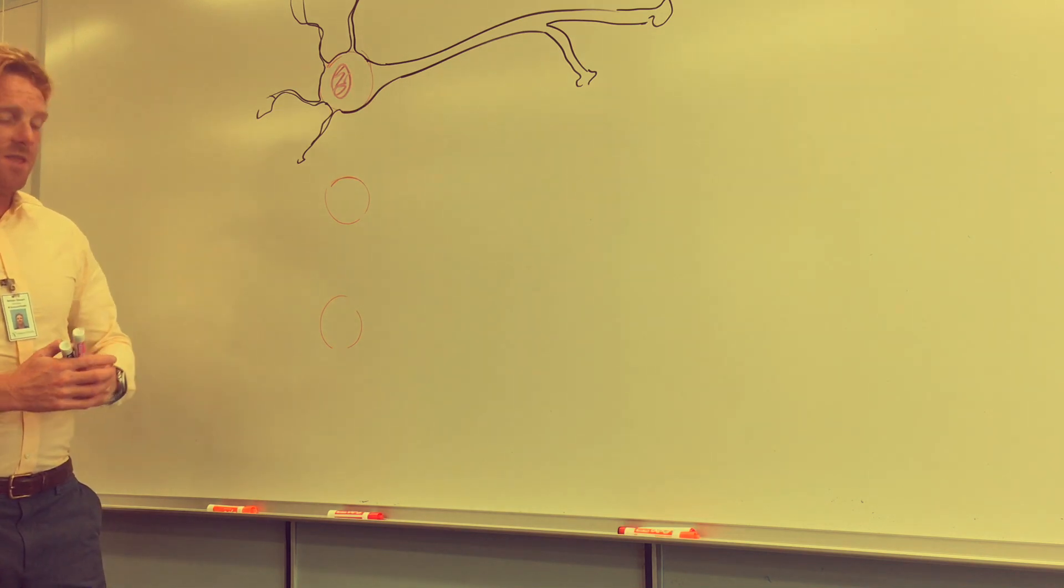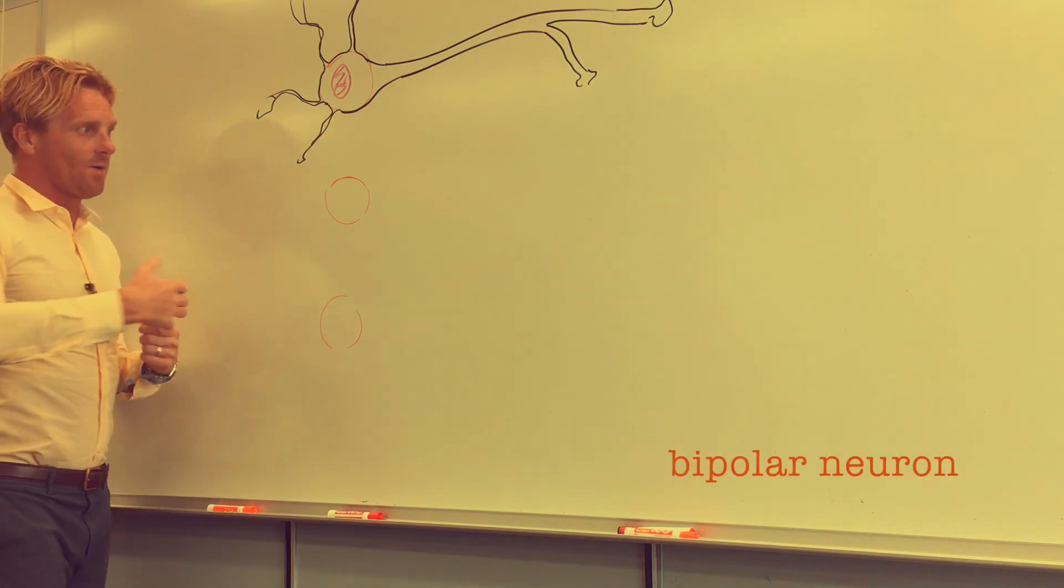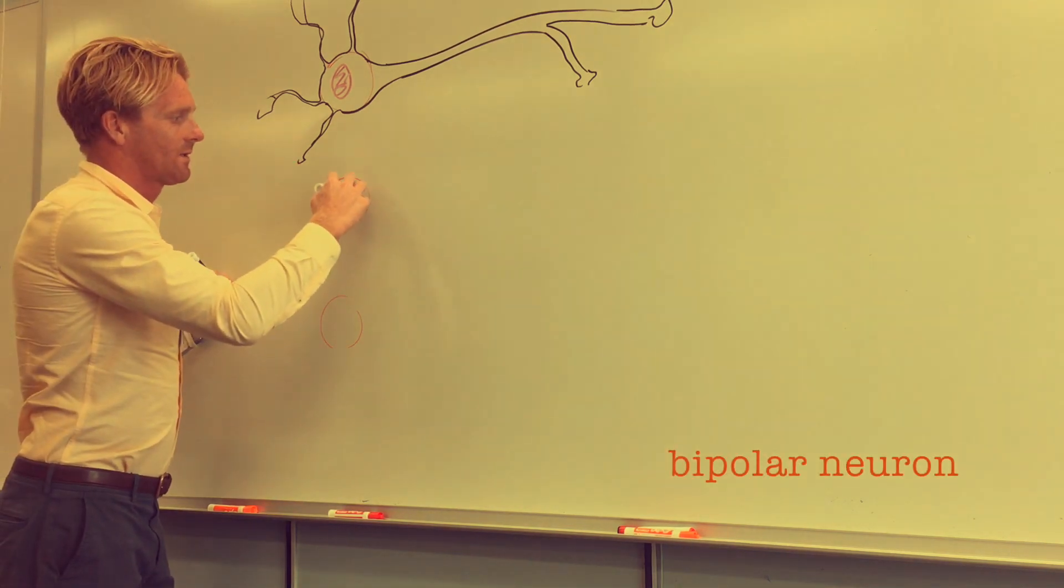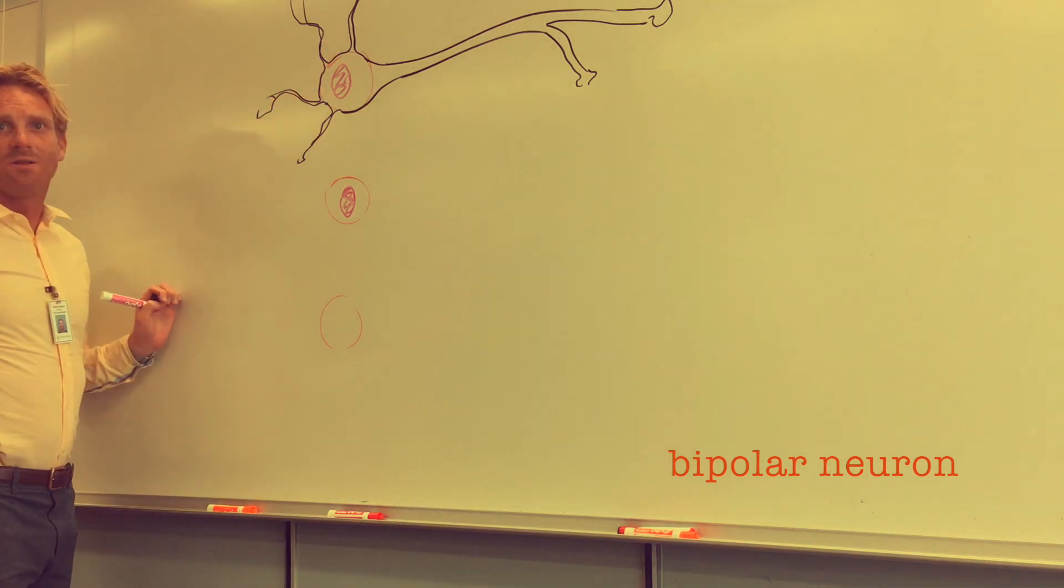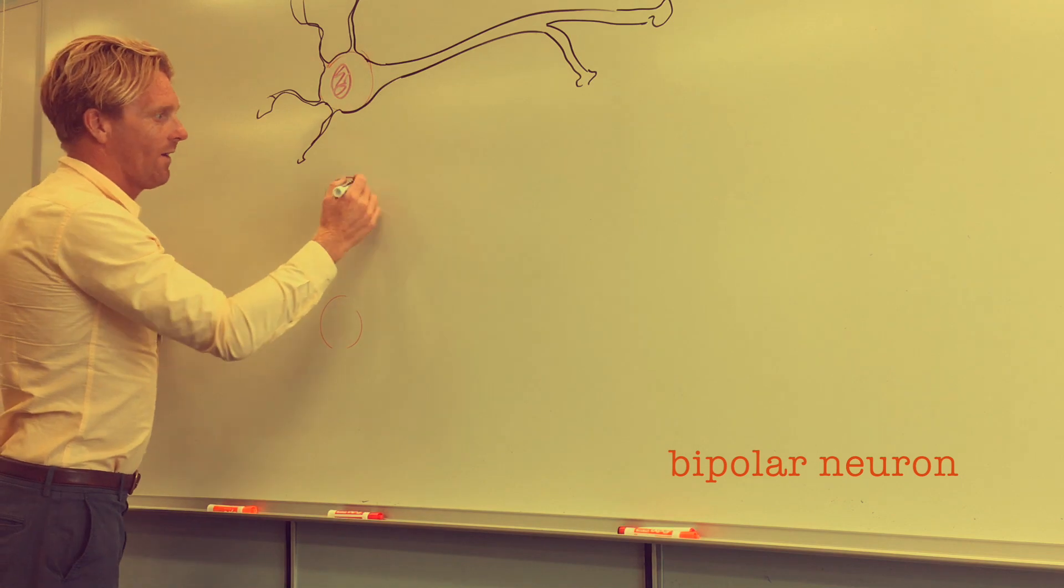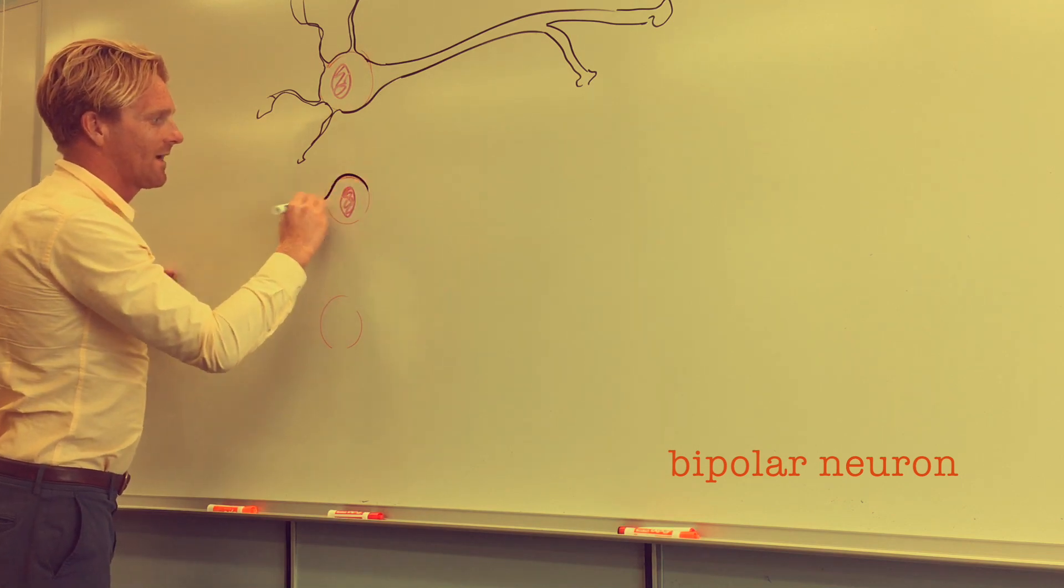Another type of neuron that you might come across is called a bipolar neuron. This one also has a cell body with a nucleus and DNA, but instead of having a bunch of dendrites, it has a single dendrite, or dendron, and what this looks like is kind of like this.